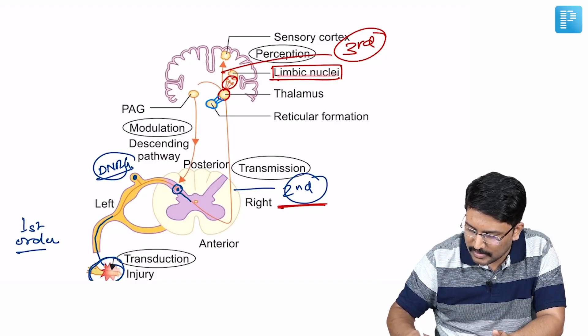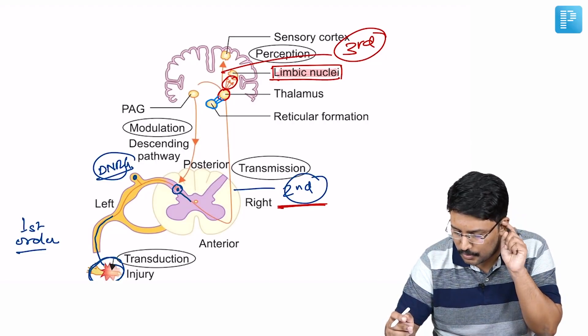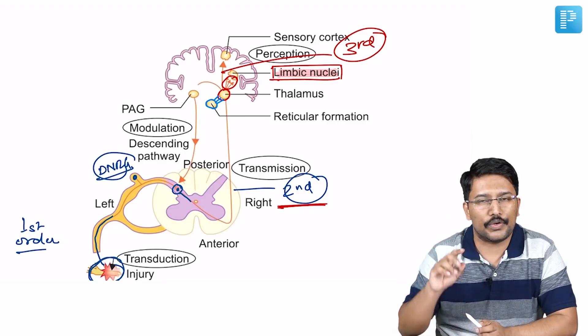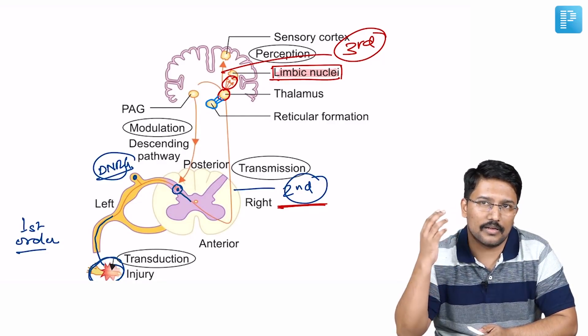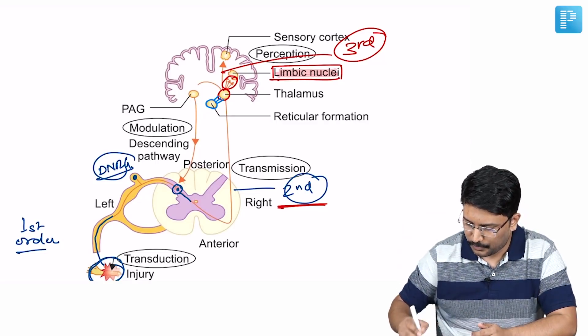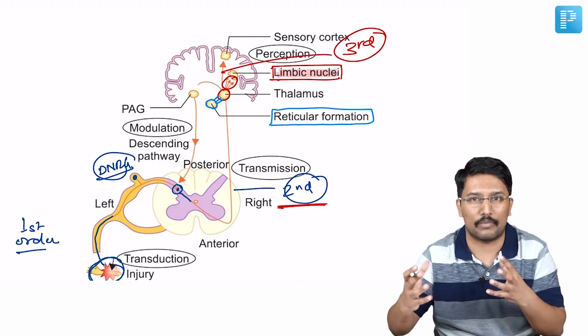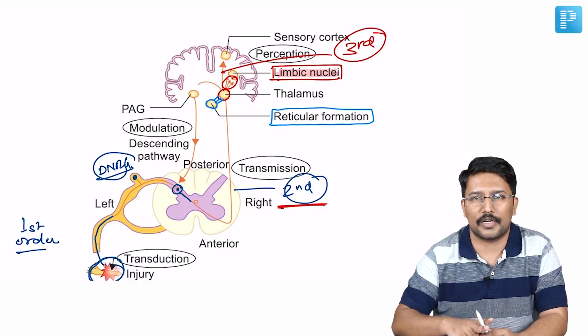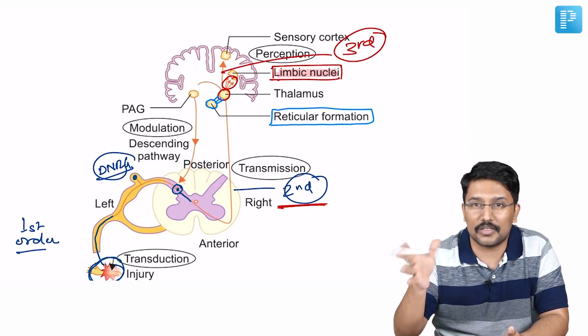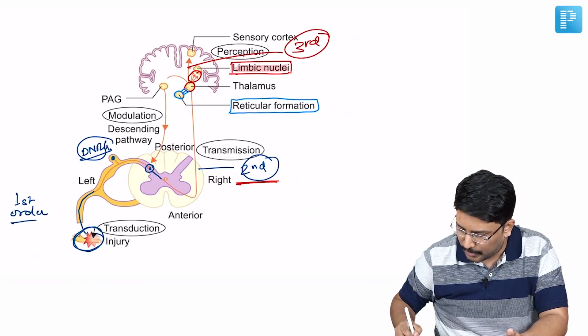You also have frequently patients coming to you telling that they're unable to sleep because of pain. That coupling is because of the involvement of reticular formation, which plays an important role in sleep-wake cycle. Because reticular formation also receives projection fibers from the thalamus from the pain pathway, patients are generally not able to sleep when pain is bothersome.